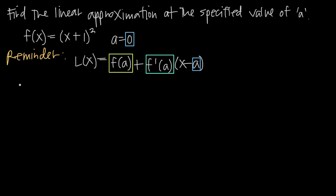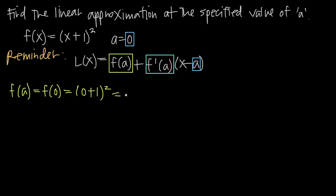Let's start with f of a. Since a is 0, that's going to be f of 0. In order to find f of 0, we just plug 0 in for x into the original function. So we get the quantity 0 plus 1 squared. 0 plus 1 is 1, and 1 squared is just 1. So the value there is 1, and we'll plug that in for f of a.